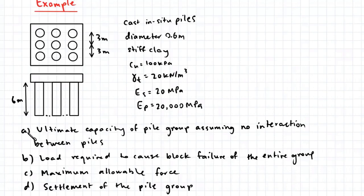From the minimum of the two values found in part A and part B, we can determine the maximum allowable force that can be applied to the pile group. Finally, we need to determine the settlement of the pile group.